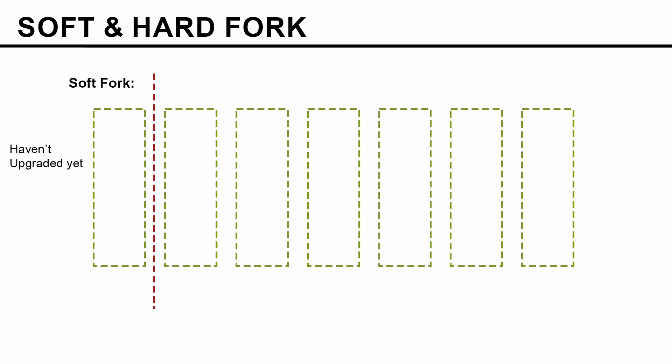Now let's look at the soft fork. For this we have two groups: one who haven't upgraded the software yet, and another who have already upgraded. The naming is slightly different here — 'haven't upgraded yet' means that eventually in a soft fork all miners will be forced to upgrade their software as per the new rules. So in a soft fork there is no split in the network — there will be only one chain. The group who have already upgraded are the majority, because soft fork only occurs when a majority agrees on the change.